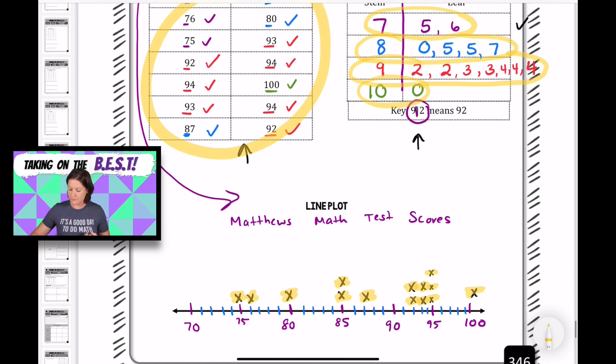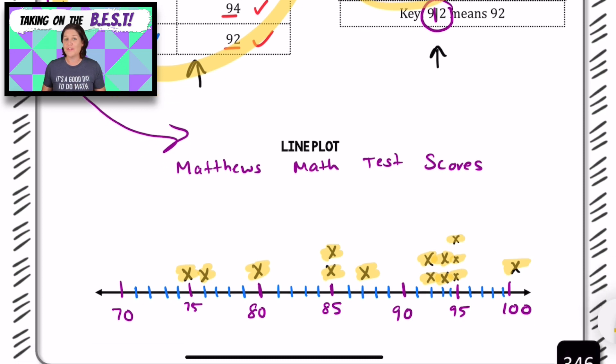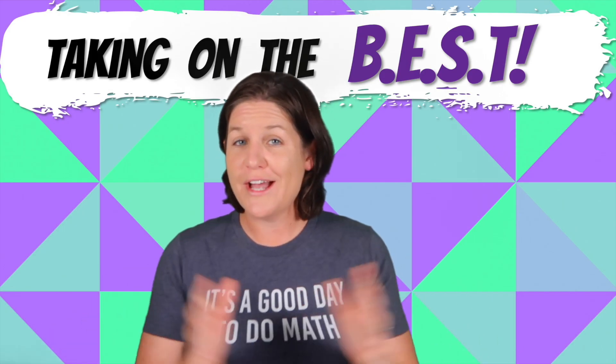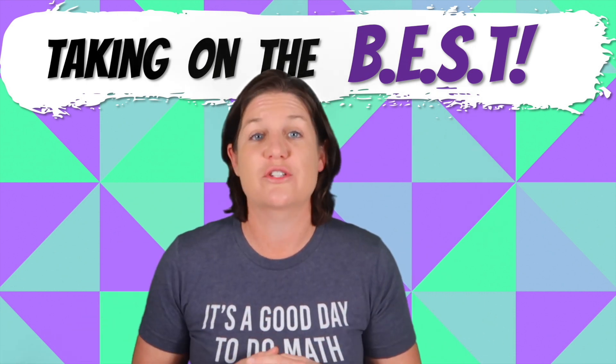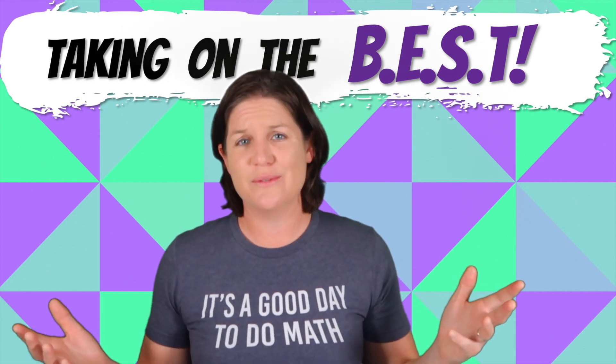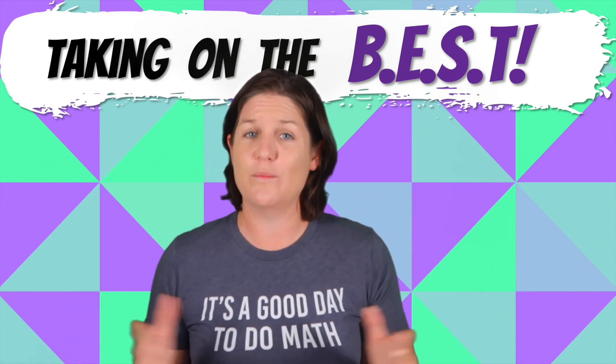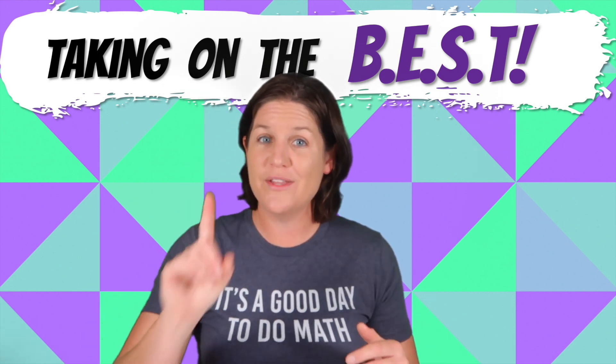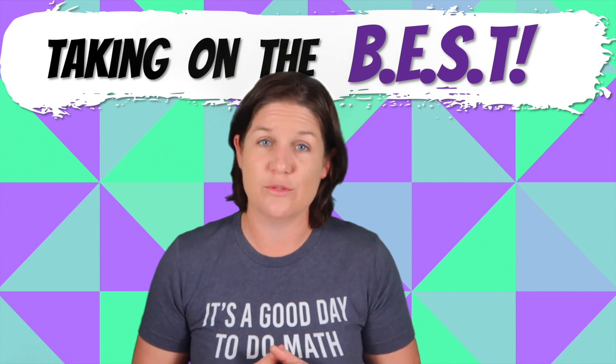So that is how you can take information from a table and create a stem and leaf plot and also a line plot. Go ahead and make sure that you have all of this copied. I hope that the information in today's video lesson clicked for you, and now it's time for you to make sure that it sticks. How do you do that? By taking charge of your learning because practice is not something we do once we're good. It's the one thing we do that makes us good.